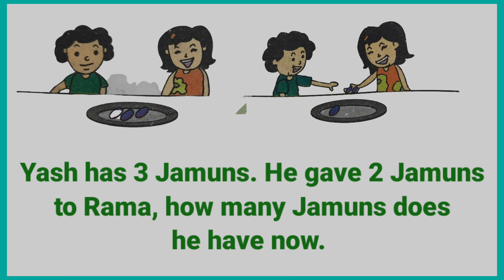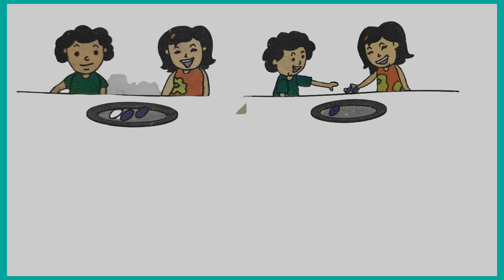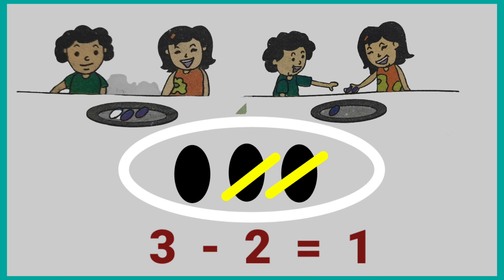In this picture, Yash has three jamuns. He gave two jamuns to Rama. How many jamuns does he have now? That means three minus two is equal to one. Yash now has one jamun.